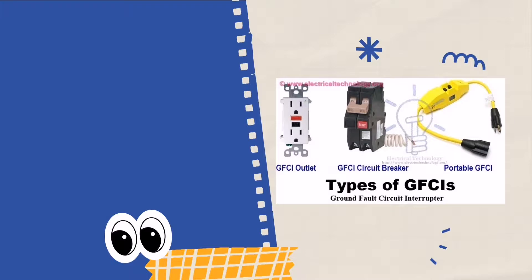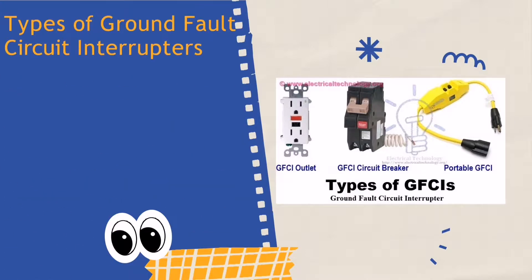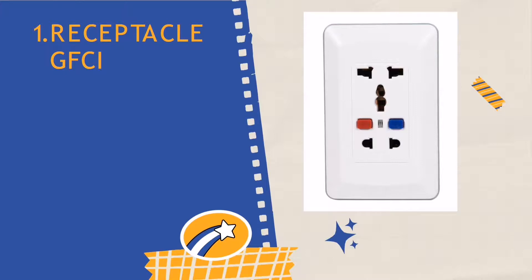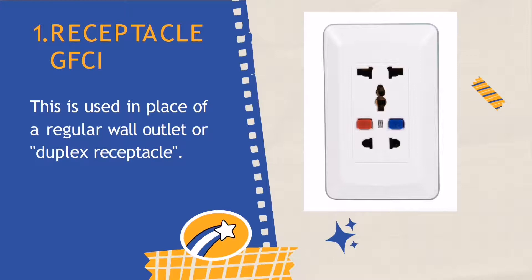There are different types of GFCI: the Receptacle GFCI, Temporary or Portable GFCI, and Circuit Breaker GFCI. The Receptacle GFCI is used in place of a regular wall outlet or duplex receptacle. This GFCI is normally found throughout the house in places such as bathrooms, kitchens, garage, outdoor areas, and other locations where damp conditions may exist. The Receptacle GFCI fits into the standard outlet box and protects you against ground faults when an electrical product is connected to the GFCI-protected outlet.